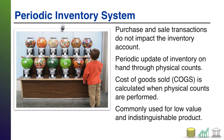Now, a periodic inventory system — how is that different? Notice that first phrase: periodic. This means that your inventory account is updated periodically rather than ongoingly. Another word for periodically would be intermittently. So you're not updating the inventory with every single transaction. Instead, you're going to update it specifically at the end of your accounting period.